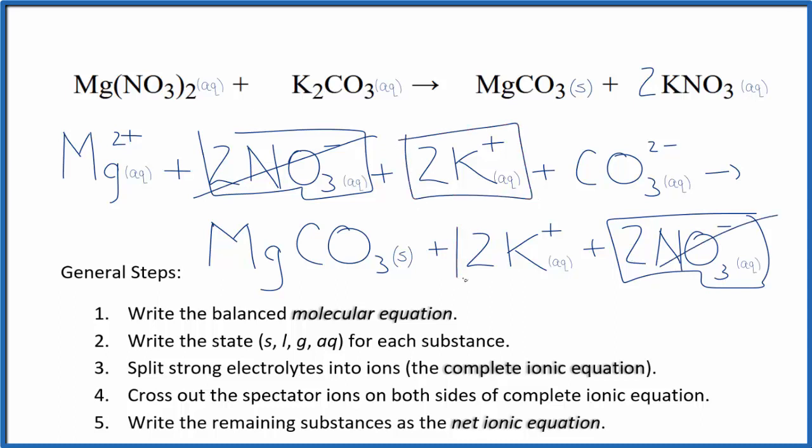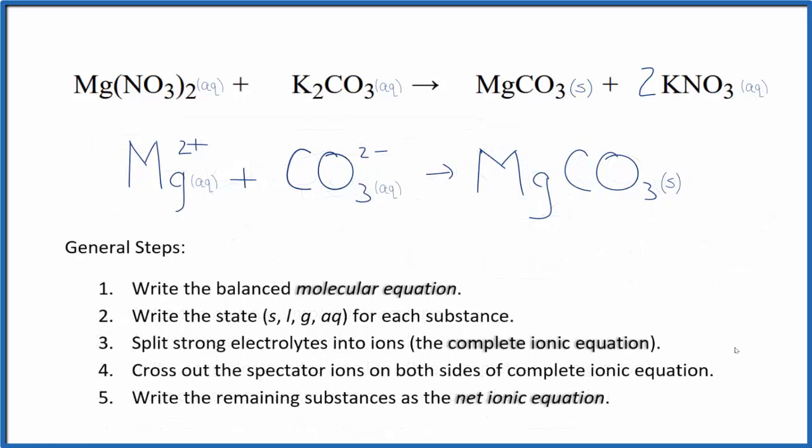Two potassium ions. Again, we see two potassium ions. Cross those out. What's left, that's the net ionic equation for Mg(NO3)2 plus K2CO3. Let's remove those spectator ions. And this is our balanced net ionic equation.